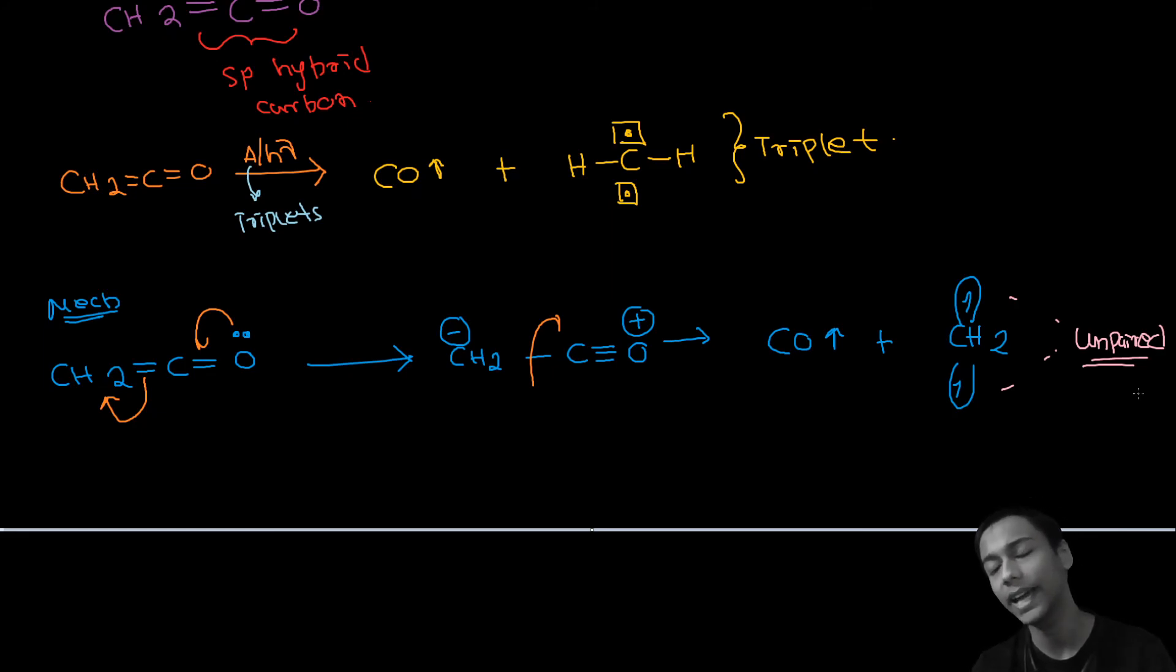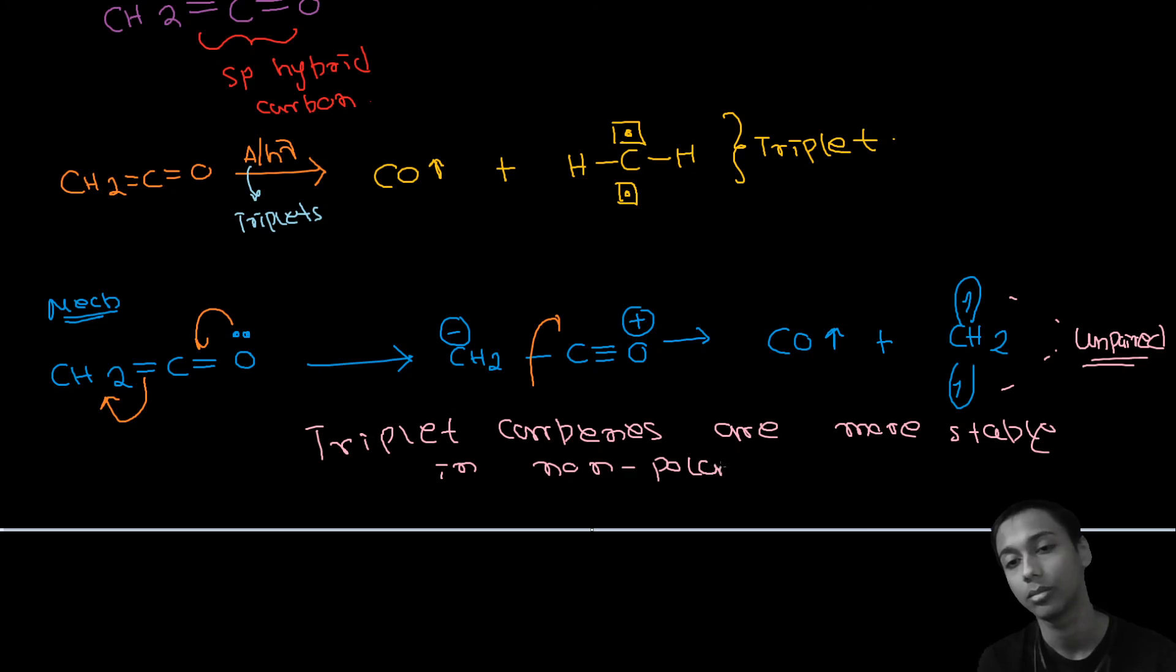Just like I told that the singlet carbenes are more stable in polar medium due to the backbonding of the polar medium, let me write down: triplet carbenes are more stable in non-polar medium. What are polar mediums? Things like water, alcohols, in which mediums there is a gradient of charge visible within the molecule. And everything else is non-polar.